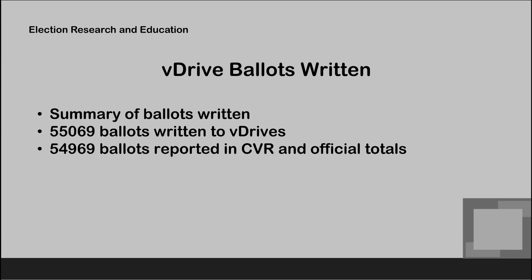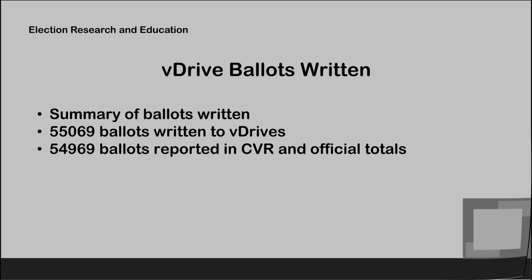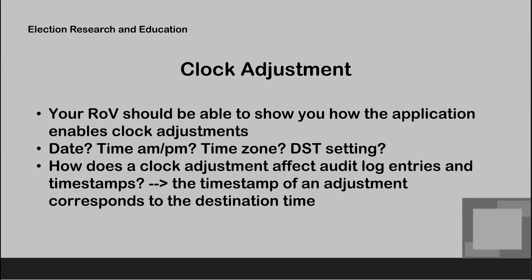The V-drive ballot summary shows 55,069 ballots written to V-drives, compared to 54,969 in the official tally and in the CVR — a discrepancy of 100 ballots. You should be able to ask your ROV to show you how the application enables clock adjustment. It would be interesting to go to Verity Central and ask how you change the time from this application. You probably have a date field, a time field with AM and PM, a time zone setting like Pacific or Mountain, and maybe a daylight savings time flag.